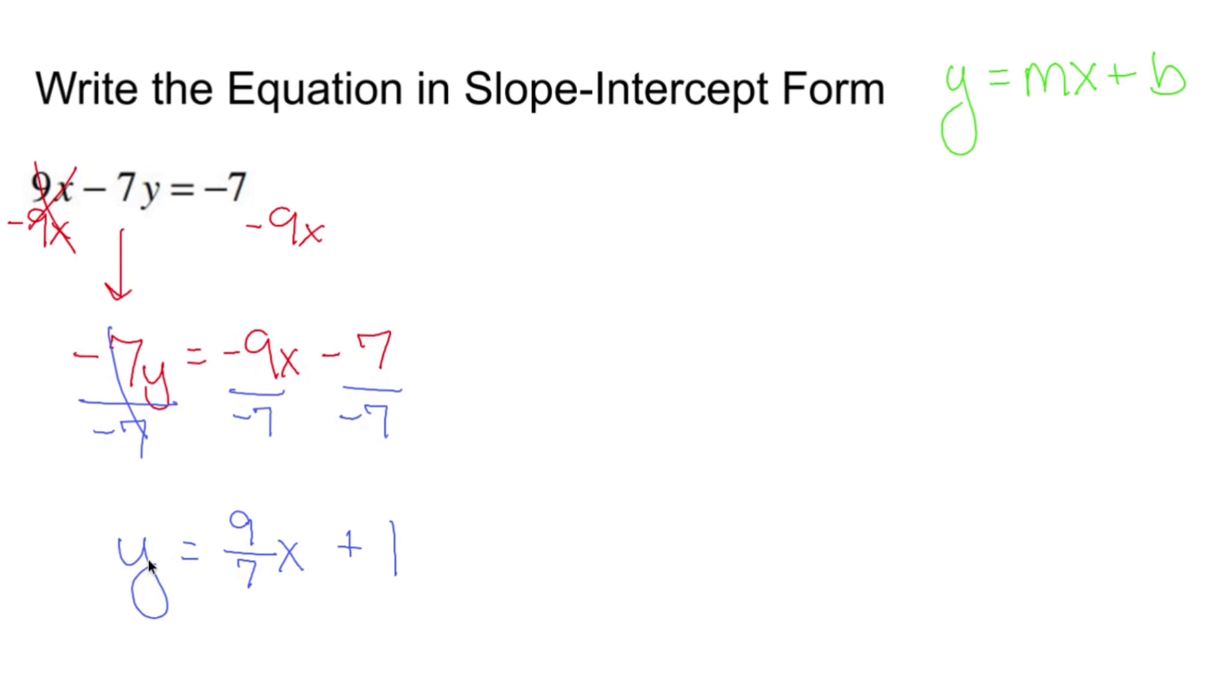Now that y is all by itself, I have my x term first and my constant that's floating around second, I now have something in slope intercept form. So that's how you do it.